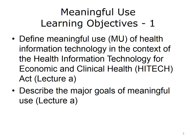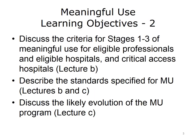The objectives for this unit on Meaningful Use are to: define Meaningful Use, or MU, of Health Information Technology in the context of the Health Information Technology for Economic and Clinical Health, or HITECH, Act; describe the major goals of Meaningful Use; discuss the criteria for Stages 1 to 3 of Meaningful Use for Eligible Professionals, Eligible Hospitals, and Critical Access Hospitals; describe the standards specified for MU; and discuss the likely evolution of the MU program.